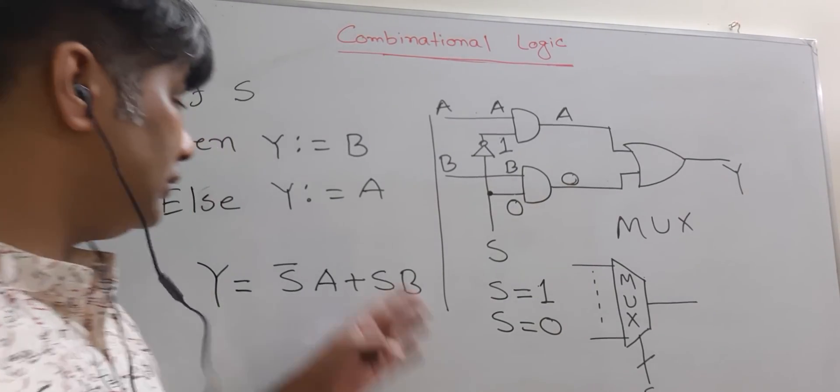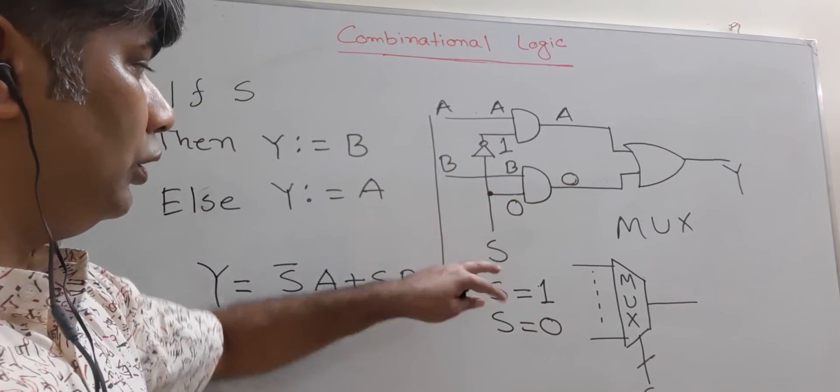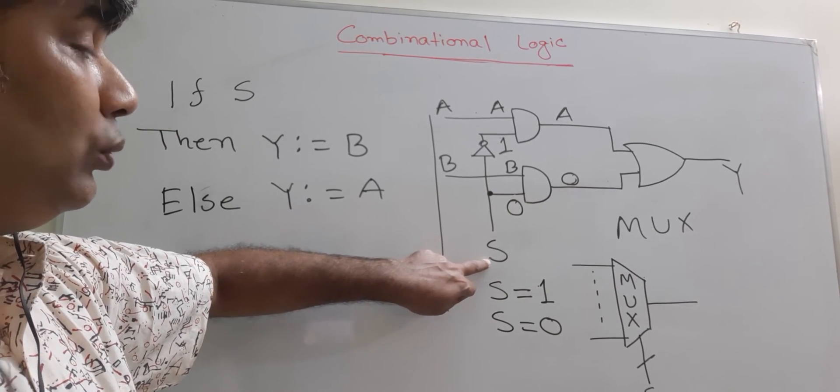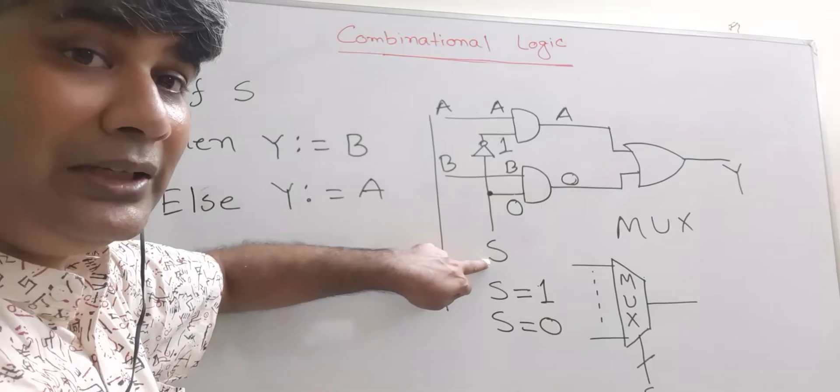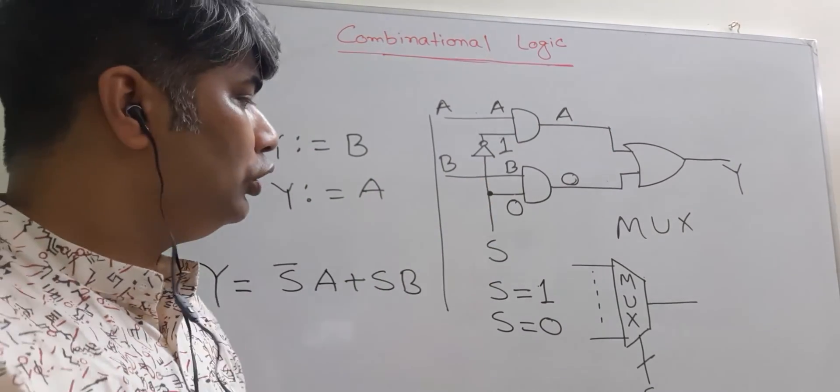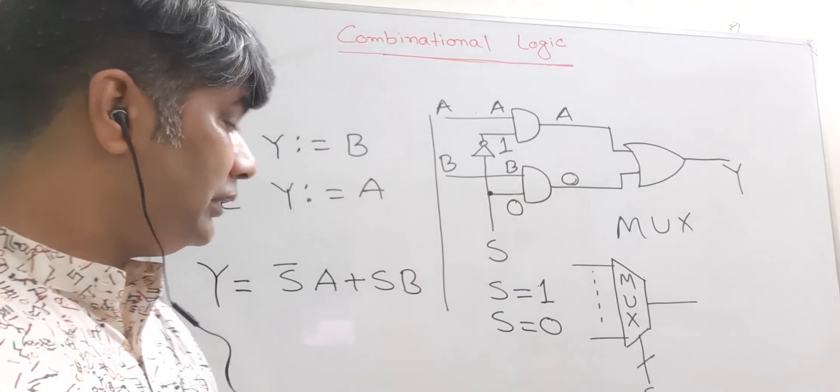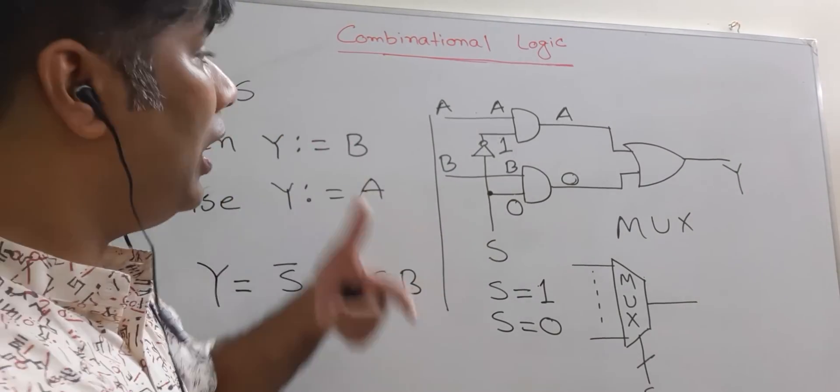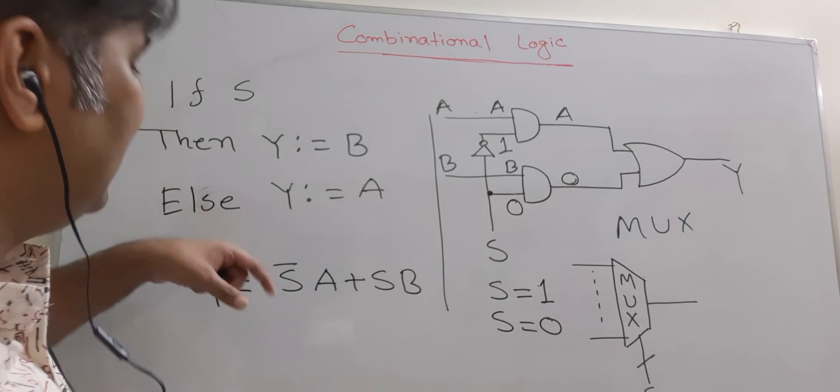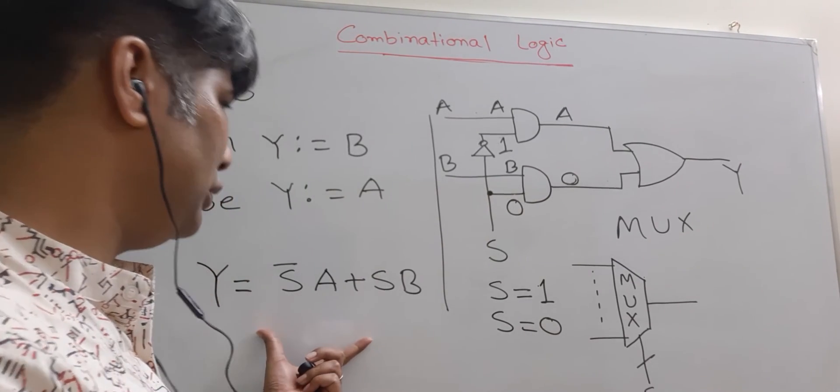Okay. Now this is how—that's why it uses S, which means S works as a selector. It selects which input should go to the output. And this is how other conditional expressions can be translated into Boolean expression.